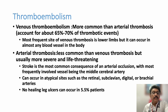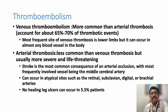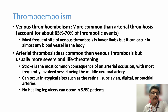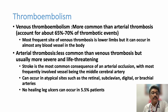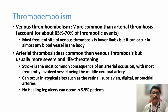Thromboembolism can be venous or arterial. This is one of the important conditions that can present with both arterial and venous thromboembolism. Very few conditions can present with both, because the mechanisms of arterial and venous thromboembolism are different. It accounts for 65–70% of thrombotic events. The most frequent site of venous thrombosis is the lower limbs, with calf muscle tenderness, swelling, lower limb edema, and sudden onset of pain in the lower limbs.